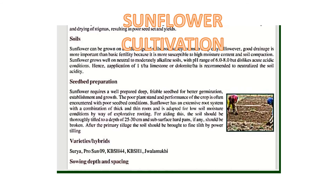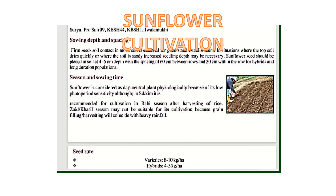Moving on to sowing depth and spacing: firm seed-to-soil contact in moist soil is essential for good stand establishment. In situations where the topsoil dries quickly or where the soil is sandy, increased seeding depth may be necessary. Sunflower seed should be placed in soil at 4 to 5 centimeters depth, with spacing of 60 centimeters between rows and 30 centimeters within the rows for hybrids and long-duration populations.